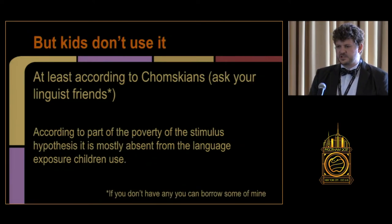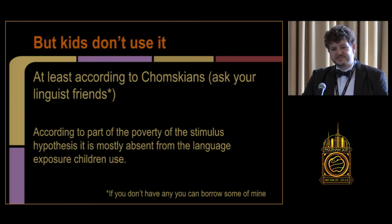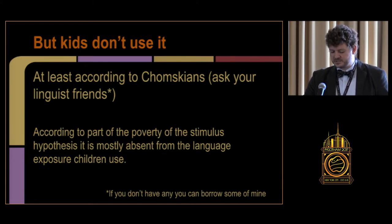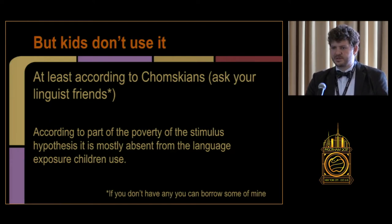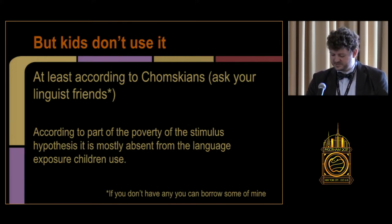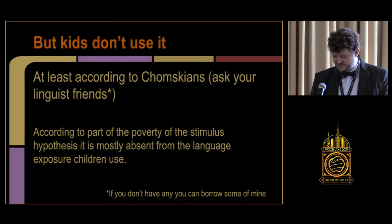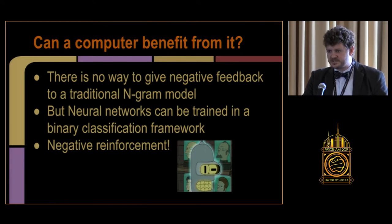But according to Chomskyan theory, which encompasses most of the field, kids don't use negative evidence — or get very little of it — while being exposed to a language, and manage to learn a language all the same. So we have human expert linguists who can use negative data to pry at structures, but the best human language learners don't seem to be using it. Can computers benefit from negative evidence? Can they be more like expert linguists and less like babies?